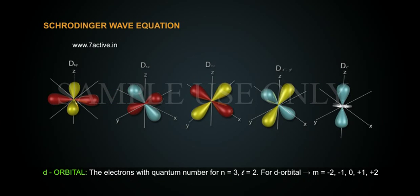D orbital: The electrons with quantum number for N is equal to 3, L is equal to 2. For D orbital, M is equal to minus 2, minus 1, 0, plus 1, plus 2.